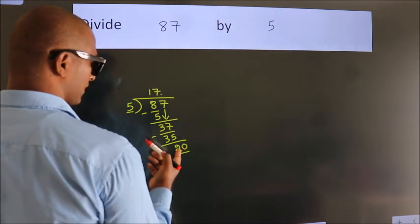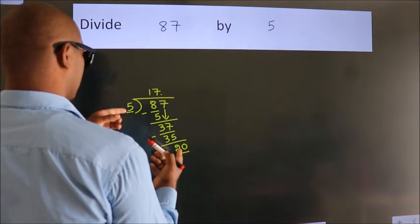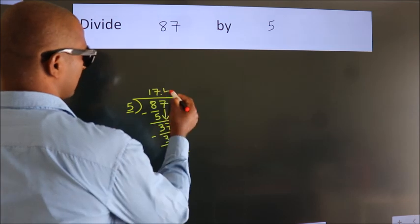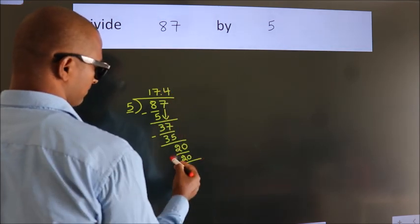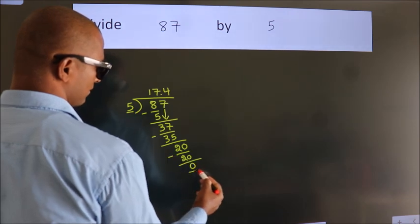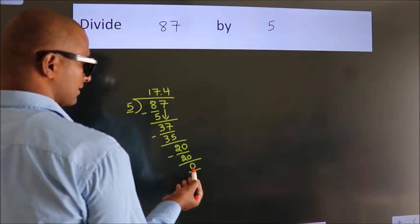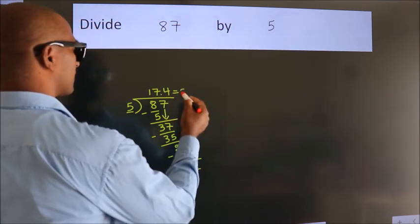So, 20. When do we get 20? In 5 table. 5 4s 20. Now we subtract. We get 0. We got remainder 0. So, this is our quotient.